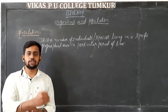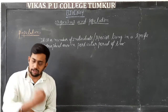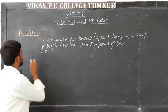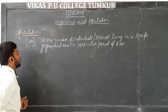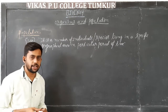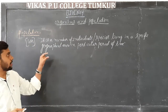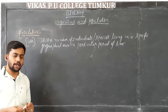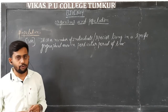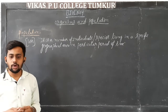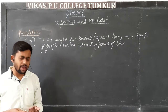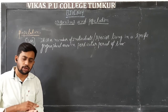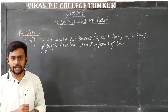It includes the death rate and the birth rate. Population is one mass — it is a number of species living in a specific geographical area in a particular period of time.